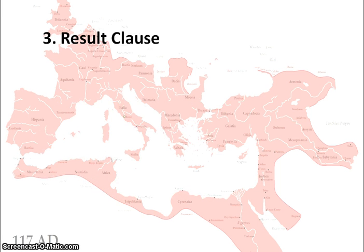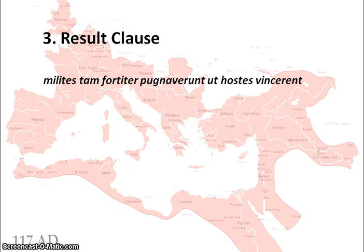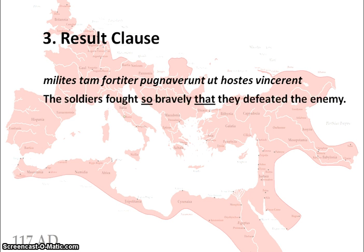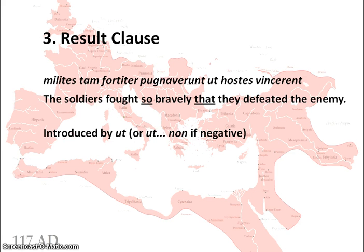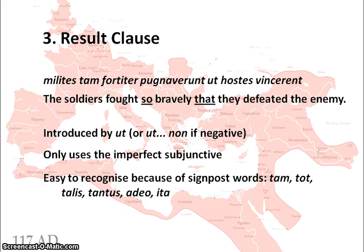The third use is the result clause — somebody did something with the result that something else happened. For example: 'milites tam fortiter pugnaverunt ut hostes vincerent' — the soldiers fought so bravely that they defeated the enemy. Notice that 'ut' is used again, but the negative is not 'ne'; it is 'ut...non' with the subjunctive. What really gives a result clause away is the signpost word: 'tam', 'tot', 'talis', 'tantus', 'adeo', 'ita' — all signifying a result clause. Again, it only uses the imperfect subjunctive.